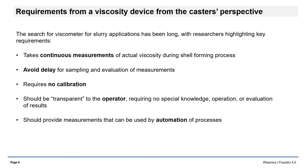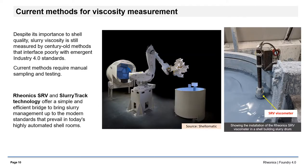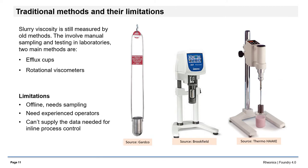It should be capable of supplying signals that can be used by automated viscosity controls. Despite its importance to shell quality, slurry viscosity is still measured by century-old methods that interface poorly with emergent industry 4.0 standards. Rhionics SRV and slurry track technology offer a simple and efficient bridge to bring slurry management up to the modern standards that prevail in today's highly automated shell rooms. Two main methods have been used to measure slurry viscosity: efflux cups and rotational viscometers.